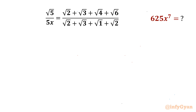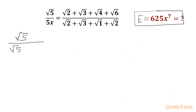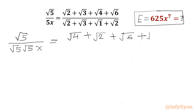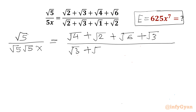Let's get started by considering our expression equal to E. I will begin with the given equation. Root 5 over 5 can be written as root 5 times root 5, so the left-hand side becomes x equal to the rearranged terms. Now I can cancel root 5 with root 5, so the LHS will be 1 over root 5 times x.